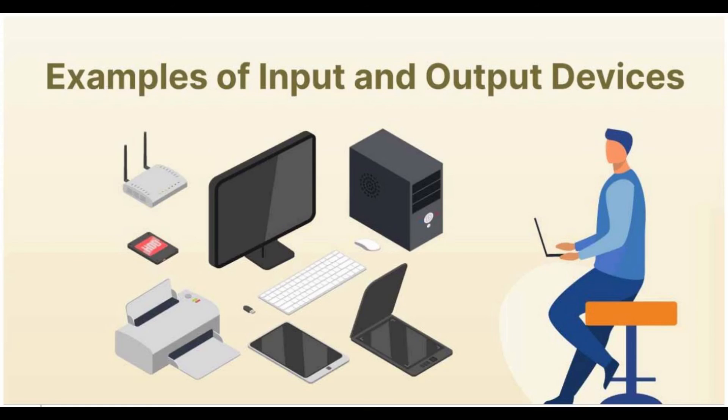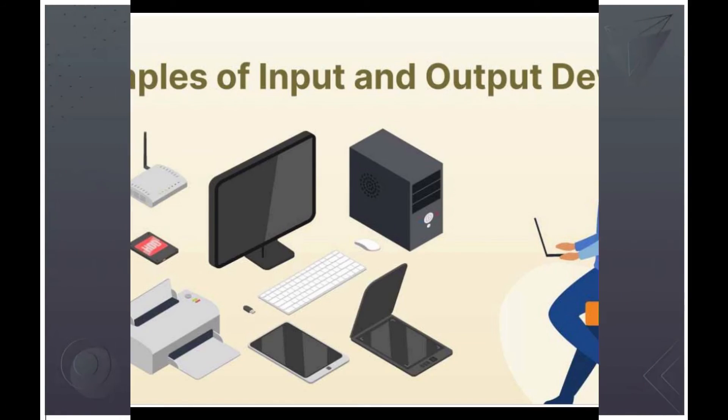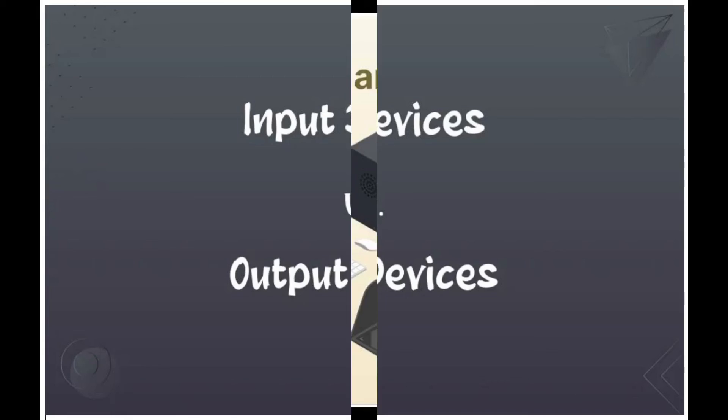Character printers are the printers which print one character at a time. These are further divided into two types: Dot matrix printer (DMP) and Daisy wheel. Dot matrix printer: In the market, one of the most popular printers is dot matrix printer. These printers are popular because of their ease of printing and economical price. Each character printed is in the form of pattern of dots and head consists of a matrix of pins of size 5x7, 7x9, 9x7, or 9x9, which come out to form a character which is why it is called dot matrix printer. Advantages: Inexpensive, widely used, other language characters can be printed. Disadvantages: Slow speed, poor quality.